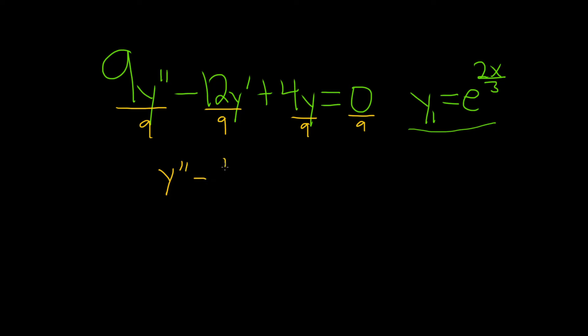So we have y double prime minus 12 over 9, which is 4 thirds, because 3 goes into 12 four times and into 9 three times. And then plus 4 ninths y, and this is equal to 0.